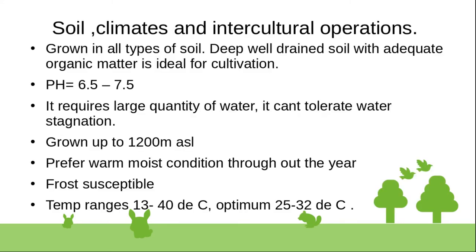Banana is grown in all types of soil, but well-drained soil with adequate organic matter is ideal for cultivation. The pH requirement is 6.5 to 7.5. It requires a large quantity of water, so irrigation should be maintained regularly.